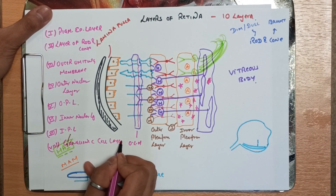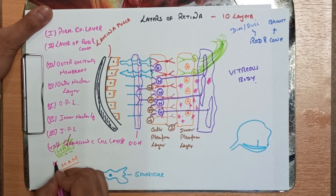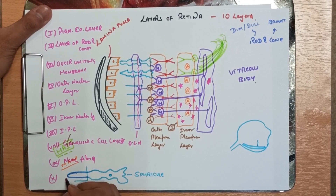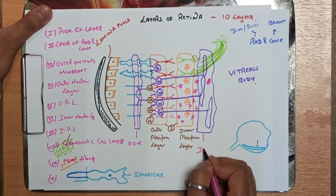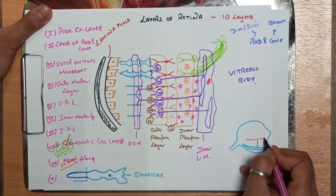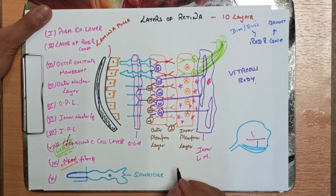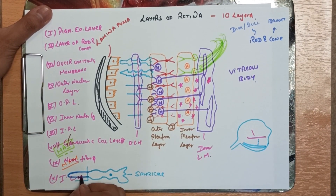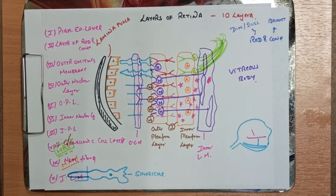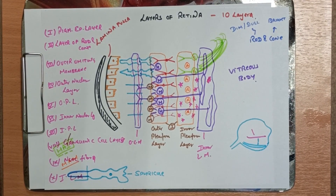The eighth layer is the ganglionic cell layer. The ninth layer is the nerve fiber layer. The tenth layer is the inner limiting membrane, which is adjacent to the vitreous body. So guys, this was the information about the layers of the retina. I hope you all understood this — please like and share, thank you.